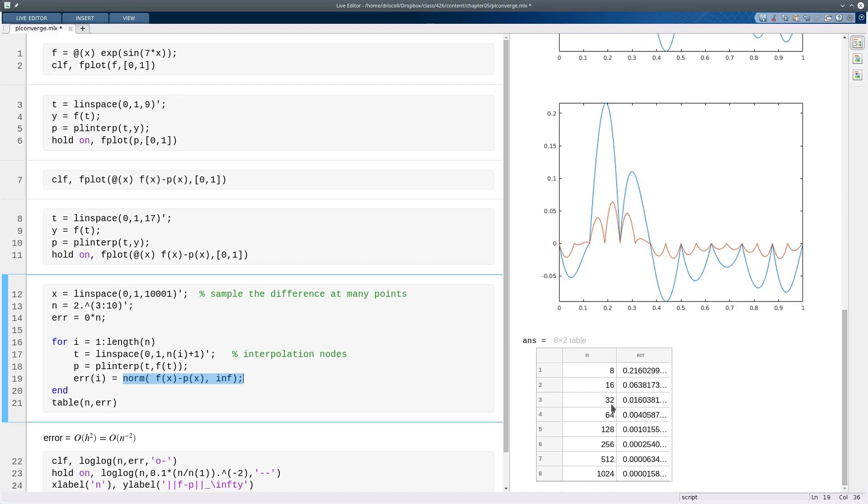So when you do that, you do see, for example, here I've chosen n so that it keeps doubling. So here you do see that it's gone from about 0.004 to 0.001, and then from there to 0.0025. So that is consistent with going down by a factor of 4 for each doubling.